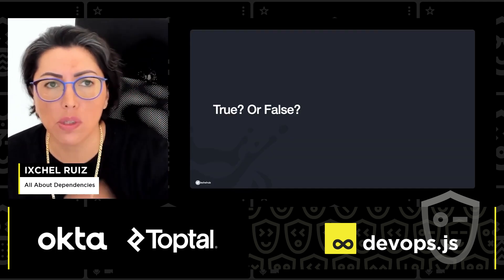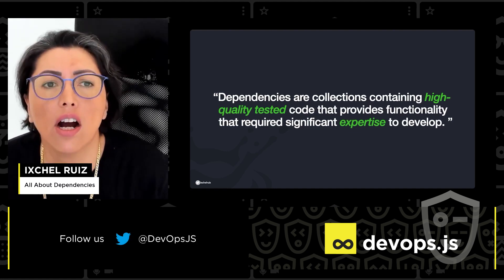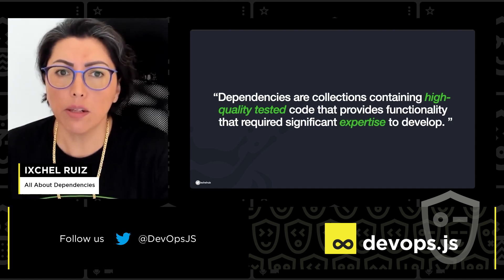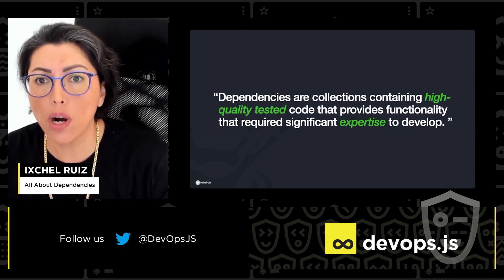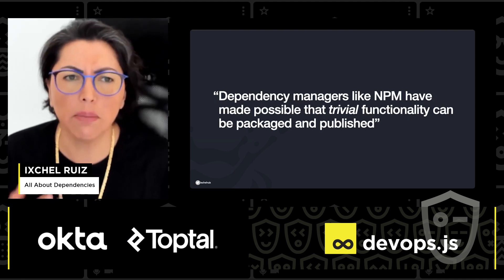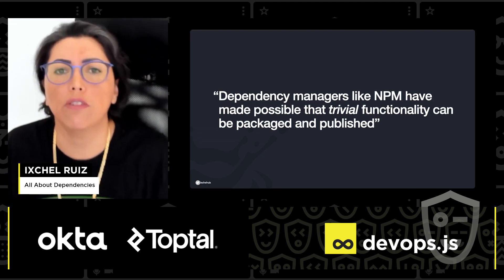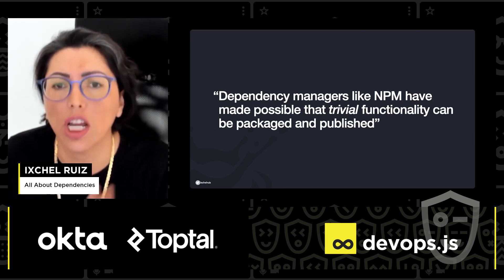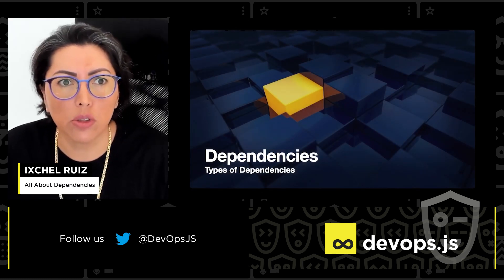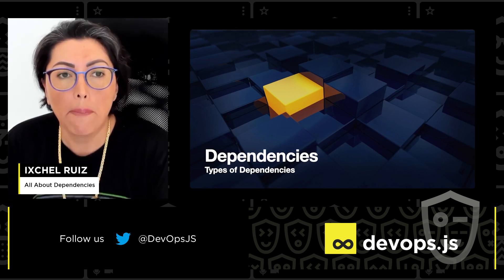I'm going to present you with two statements and you will tell me if they are true or false. Dependencies are collections containing high-quality, tested code that provides functionality requiring significant expertise to develop — true. Dependency managers like NPM have made it possible that almost trivial functionality can be packaged and published — also true. So these are both sides of the spectrum in terms of the functionality provided by dependencies.